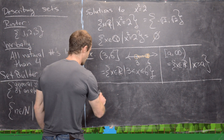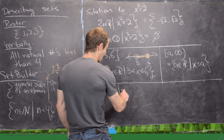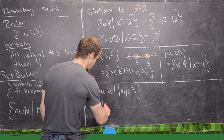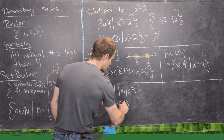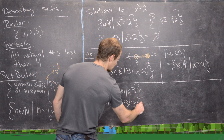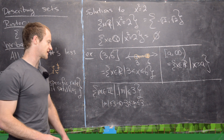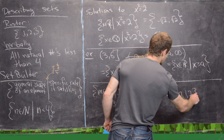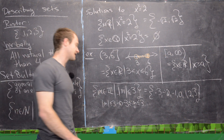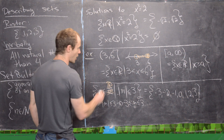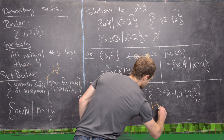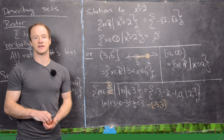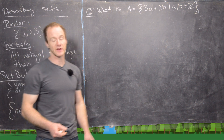Now consider something similar but restricted to integers: {m ∈ ℤ | |m| ≤ 3}. Since |m| ≤ 3 is equivalent to -3 ≤ m ≤ 3, and we're restricted to integers, the possibilities are just {-3, -2, -1, 0, 1, 2, 3} — a finite set. This is totally different from the real-number version, which would give the interval [-3, 3].